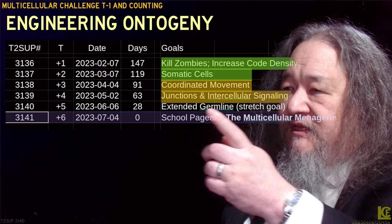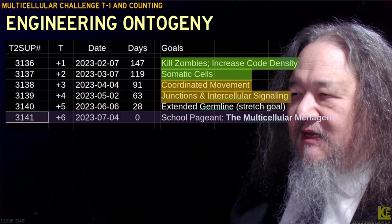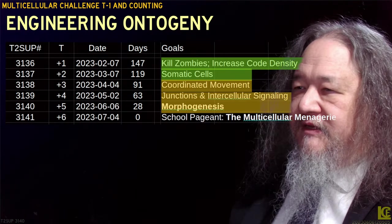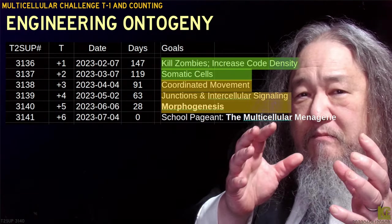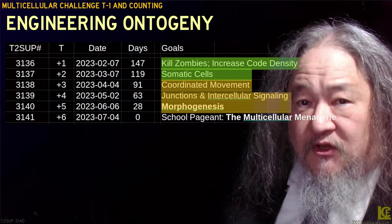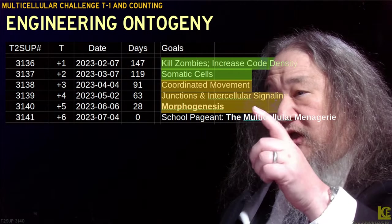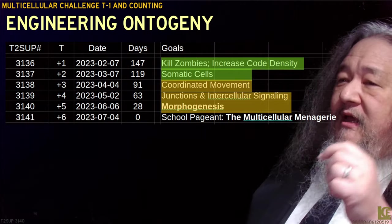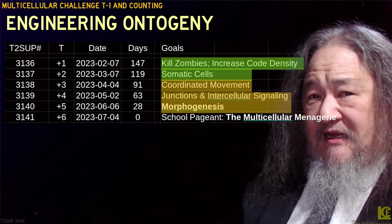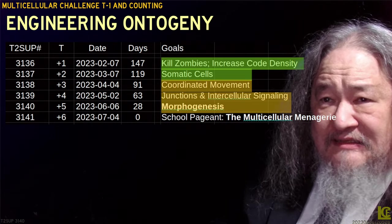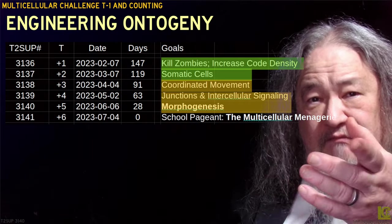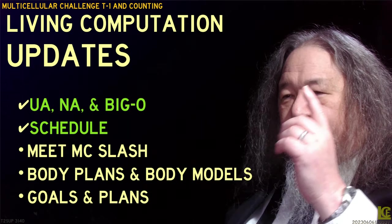The schedule continues. This month was supposed to be an extended germline stretch goal — not even exactly clear what that is. But it's been retroactively redefined to be morphogenesis, the process of building the shape of an organism — in particular, building the shape of a multicellular organism, which is what we've been trying to do. We're still holding out for the multicellular menagerie a month from now, which is actually July 4th. That's the schedule.